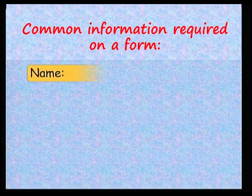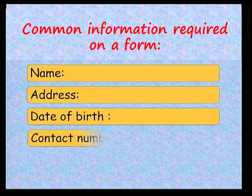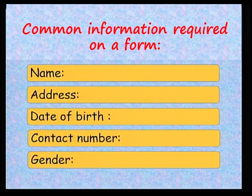Now, what are the kinds of information usually required to fill in these forms? Name, address, date of birth, telephone number, and whether we are male or female. Very good.